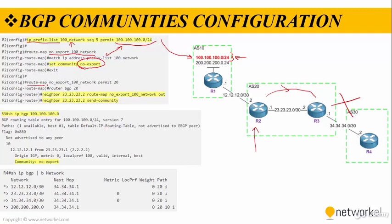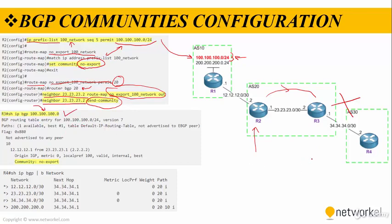We also define a route map permit 20 statement to permit the rest of the routes. Under the BGP configuration, we use the neighbor route-map no-export-100-network out command, and also the send-community command. When we check router 3's show IP BGP table, we can see the entry for that network. But when we look at router 4, we don't see anything related to the 100.100.100.0 network.